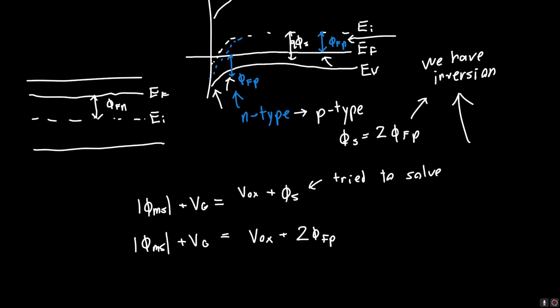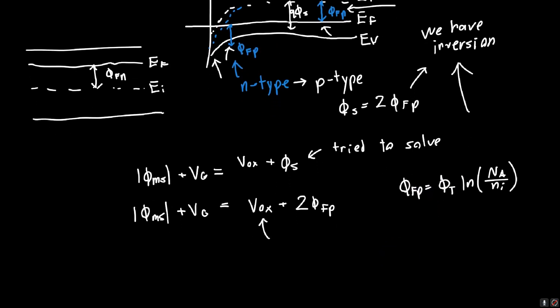And if you don't remember what PHI_FP, or how to calculate it is, it's just the thermal voltage times the natural log of the doping, divided by the intrinsic carrier doping. That's how you calculate it. And so, remember, we also, in the last video, we said that Vox was a function of PHI_FP.